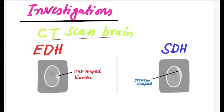Regarding investigation, CT scan of the brain is the key investigation. In extradural hematoma, the CT scan shows a hyperdense convex shadow with convexity towards the brain. In subdural hematoma, there is a crescent-shaped hyperdense opacity on the CT scan with concavity towards the brain.